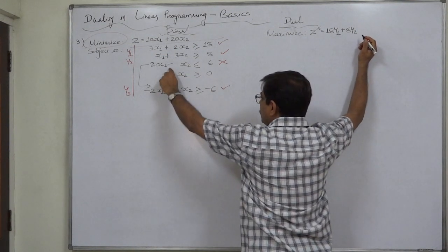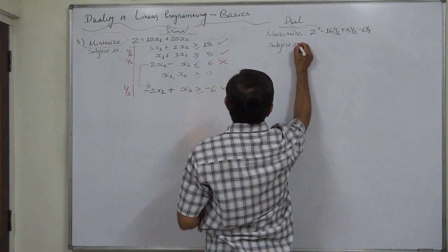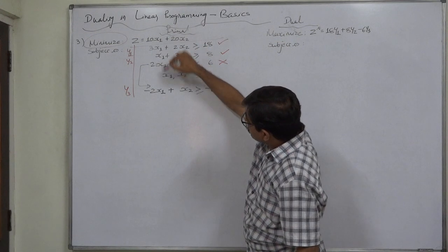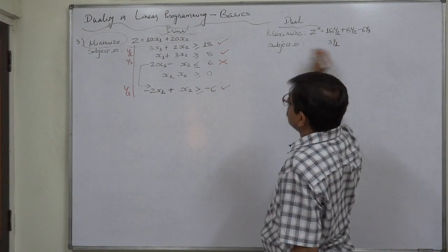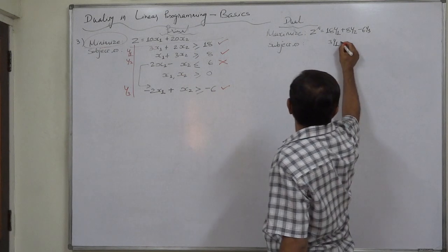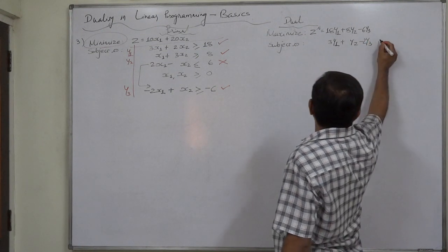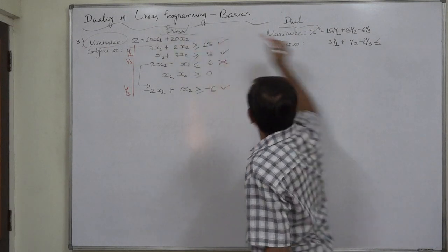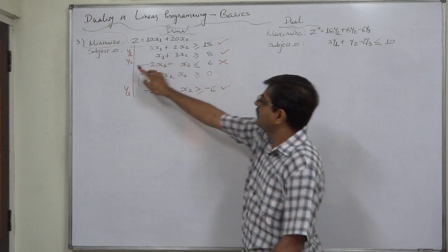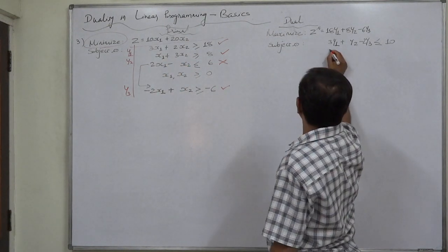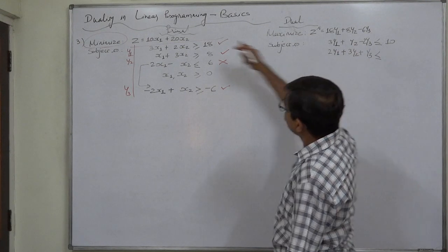So the dual objective is: maximize 18y1 plus 8y2 minus 6y3 — be careful, we are using the revised third constraint with minus 6. Subject to: the first constraint from x1 gives 3y1 plus y2 minus 2y3 less than or equal to 10. The second constraint from x2 gives 2y1 plus 3y2 plus y3 less than or equal to 20.